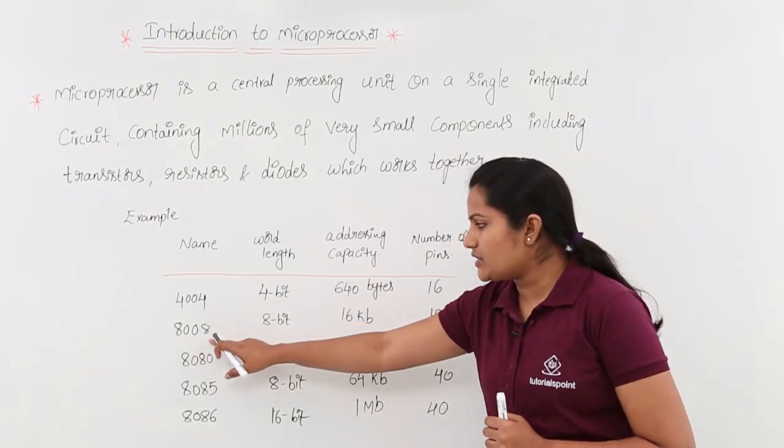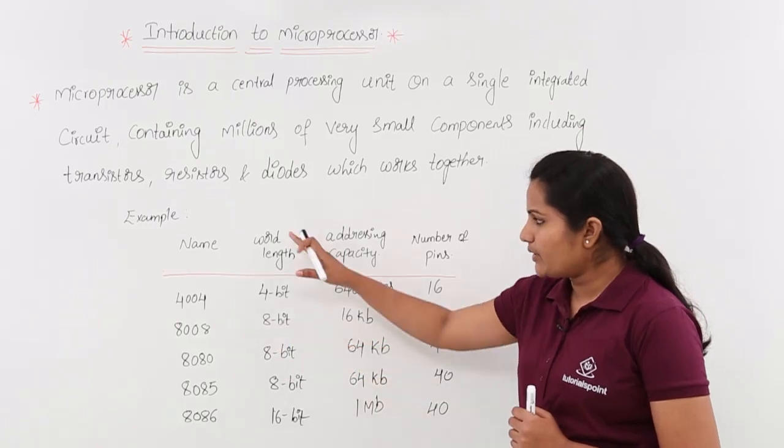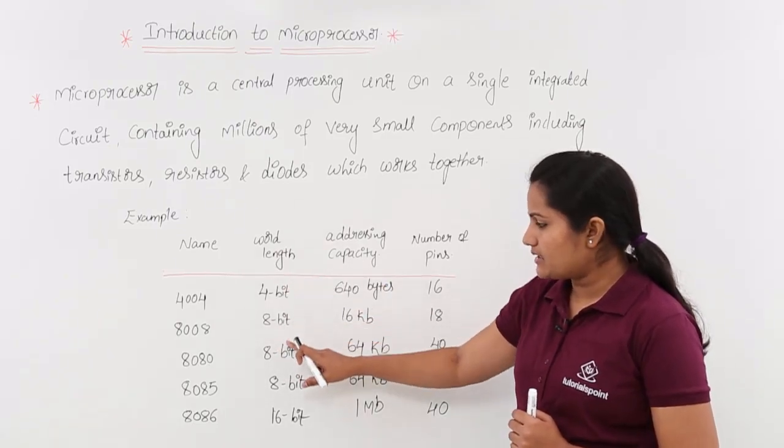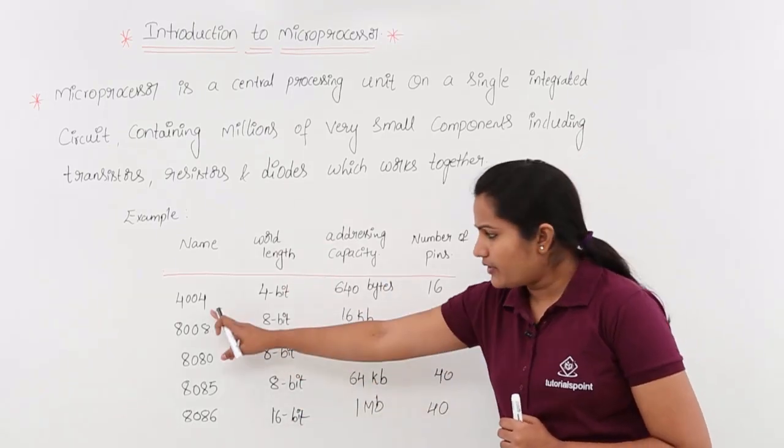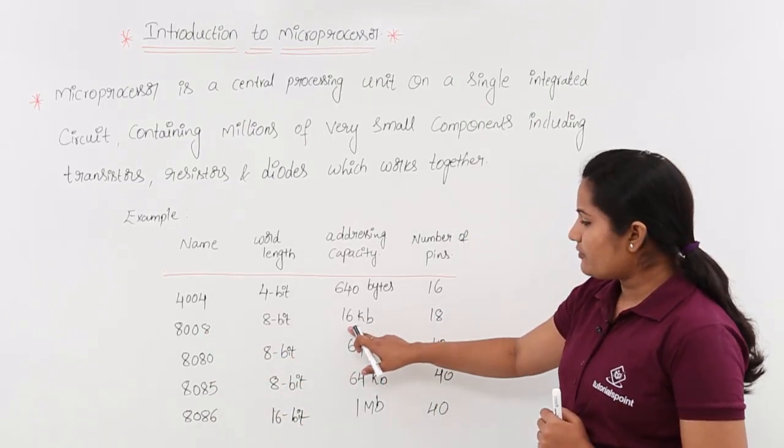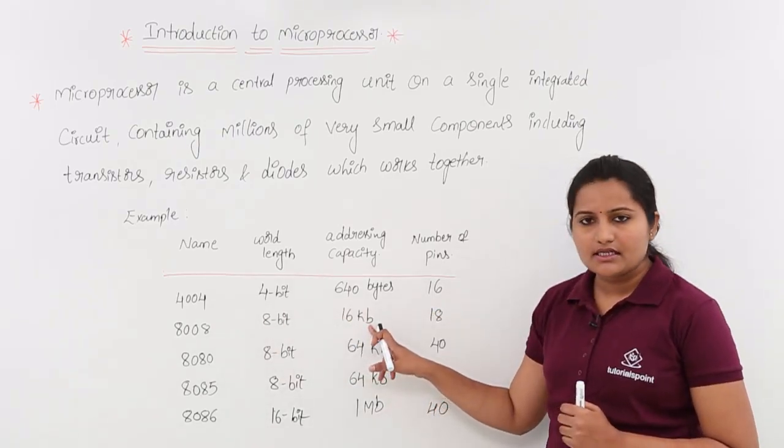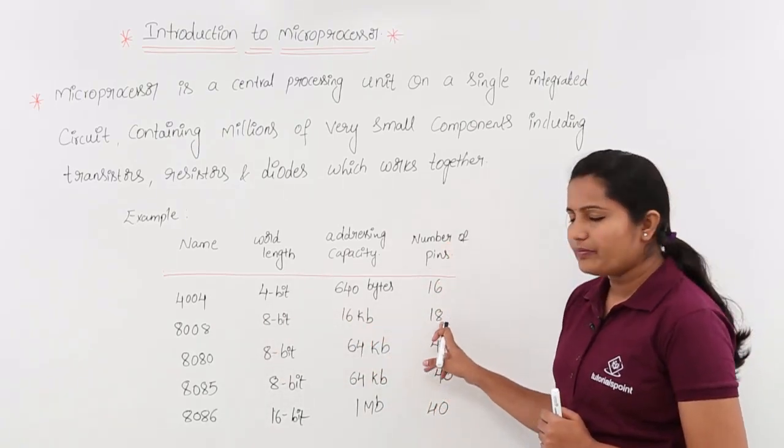Similarly, we are having 8008 microprocessor, that is of 8-bit. You can see the word length is keep on increasing from one microprocessor to another microprocessor. This is of 16 KB addressing capacity and the number of pins are 18.